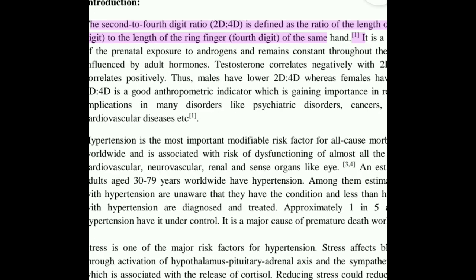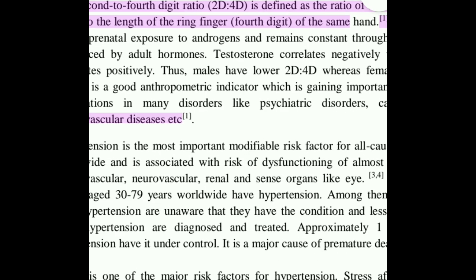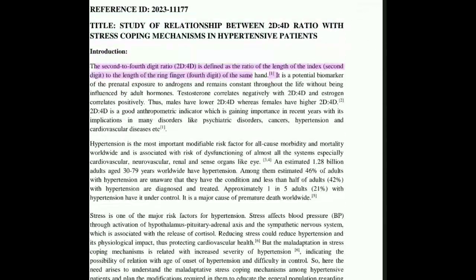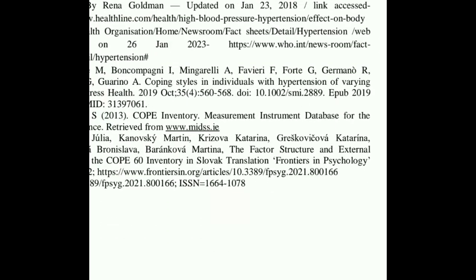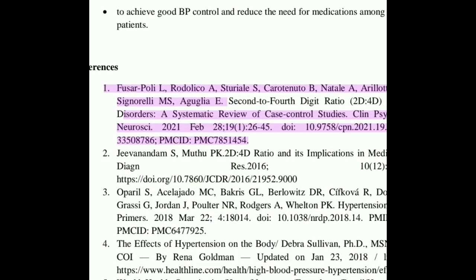See here — there is a number one as well, meaning both these lines are taken from the same article. Now let's look at the second reference. The number two is here, and the line is: 'Testosterone correlates negatively.' We will go to the references and see what we have written. See here: author name, then study name — '2D4D ratio and its implication' — and after that this is the link of the website.